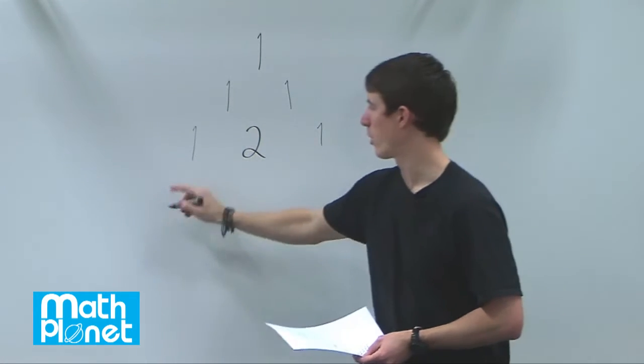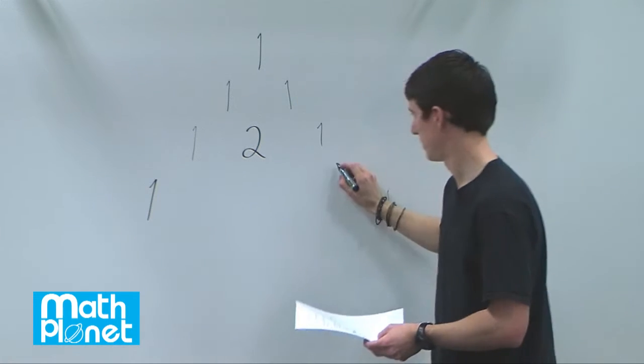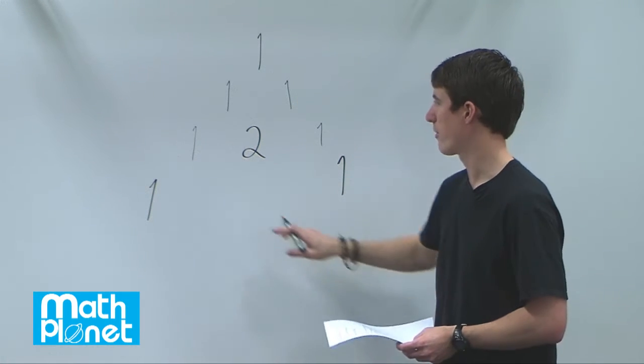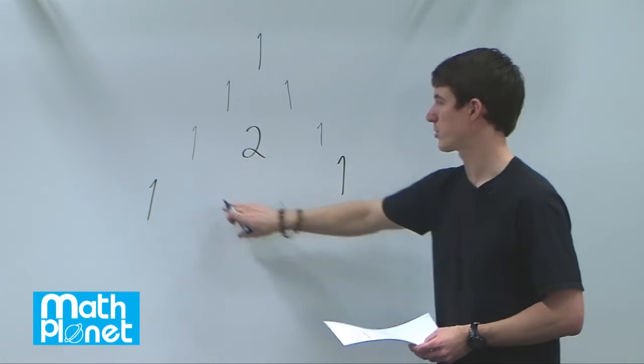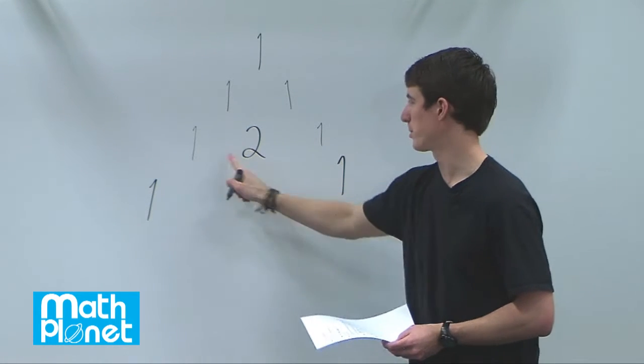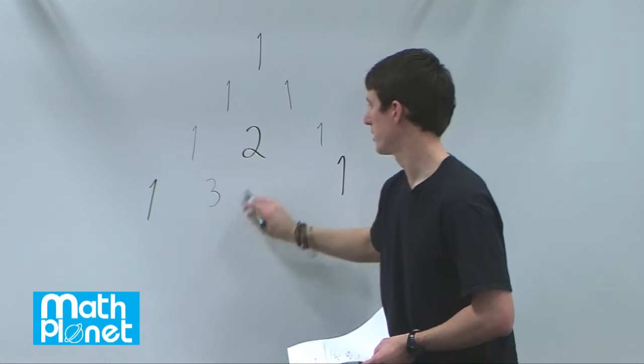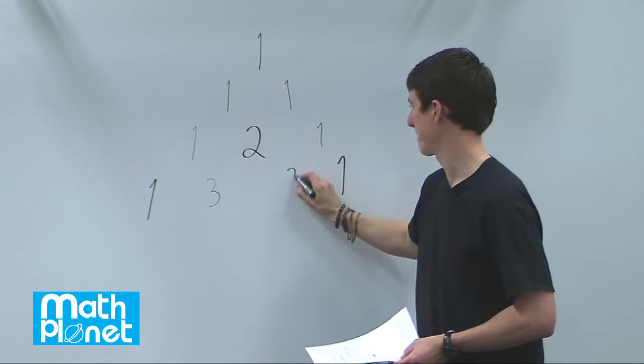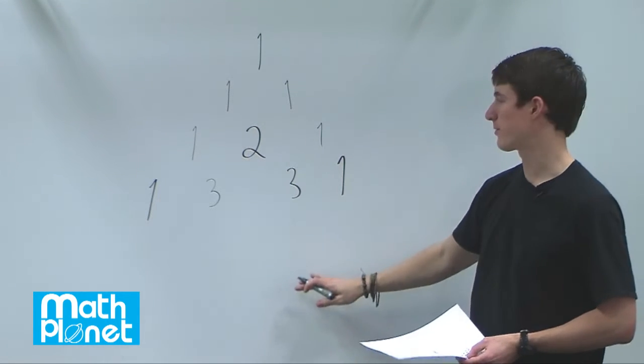So let's do this again. One's on the outside, and in this case we're going to have four terms. To determine what goes here and here, we just add these two pieces. One plus two is three. Two plus one is three. And this continues indefinitely.